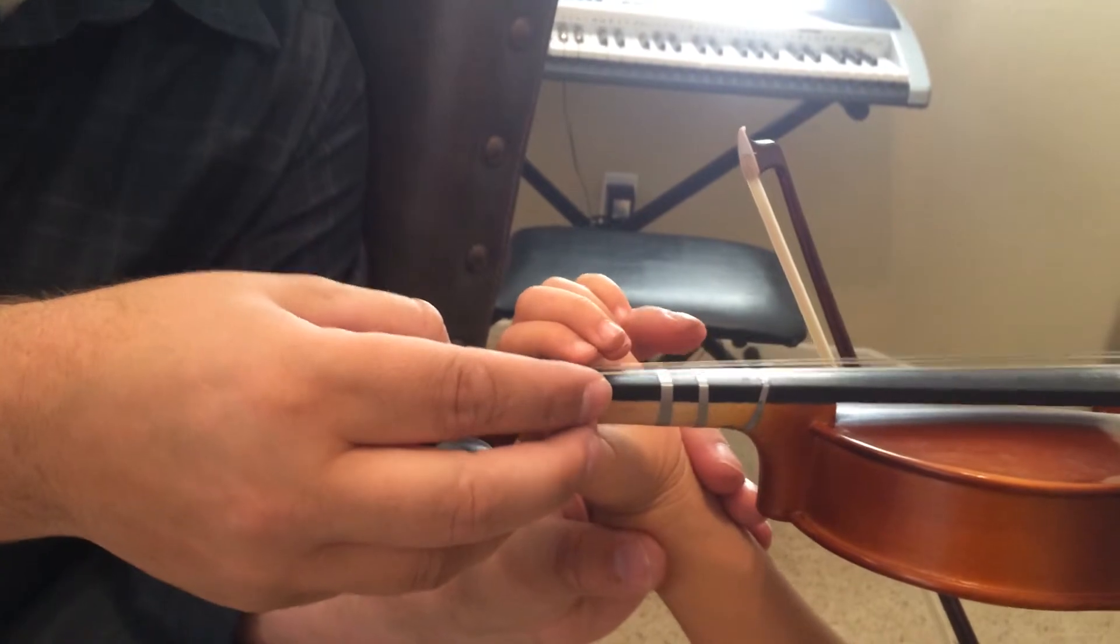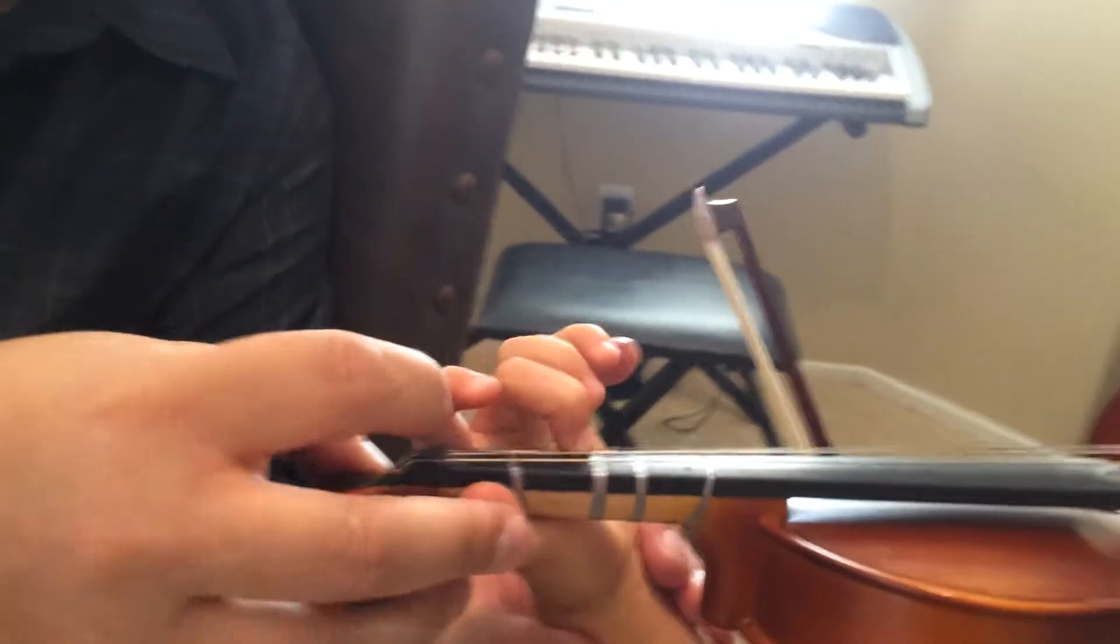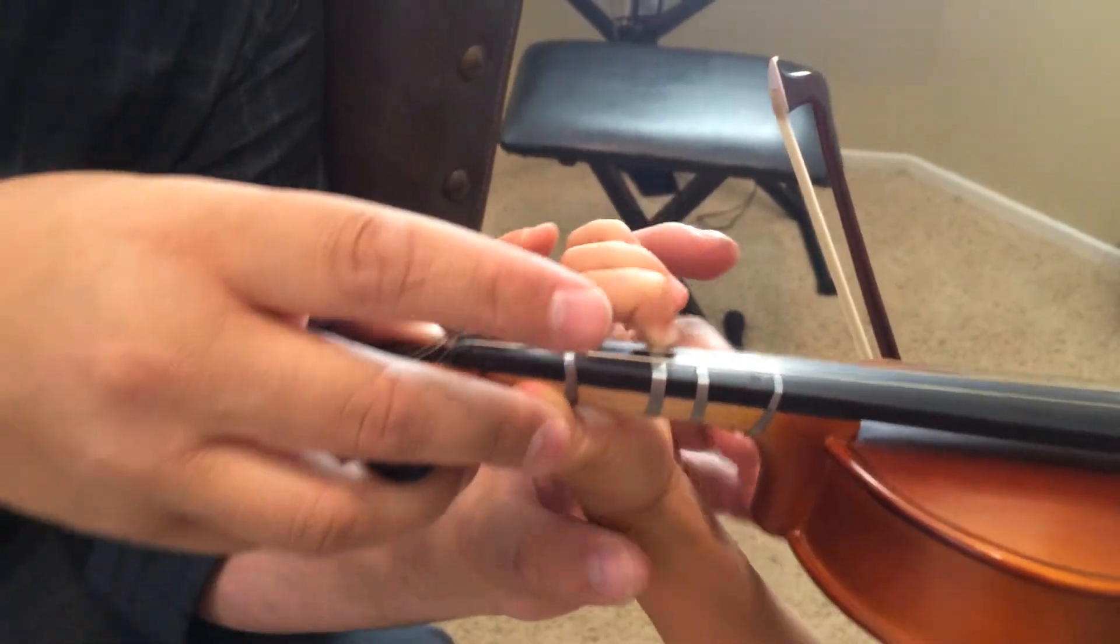Then you take your second finger on the A string, start with that one, just glide up and down. Glide up the fingerboard, you're going to pull your hand away, glide up and back, up and back.